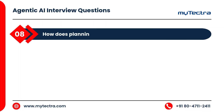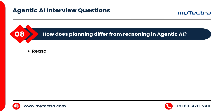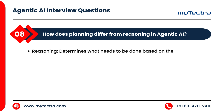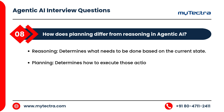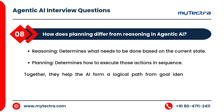How does planning differ from reasoning in agentic AI? Reasoning determines what needs to be done based on the current state. Planning determines how to execute those actions in sequence. Together, they help the AI form a logical path from goal identification to execution.